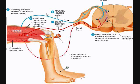This reflex is monosynaptic, meaning that there is only one synapse to have the reflex control. It is ipsilateral, meaning that the motor impulse leaves on the same side of the spinal cord, and it is not intersegmental, meaning that the motor neuron is also on the same segment of the spinal cord as the sensory neuron.